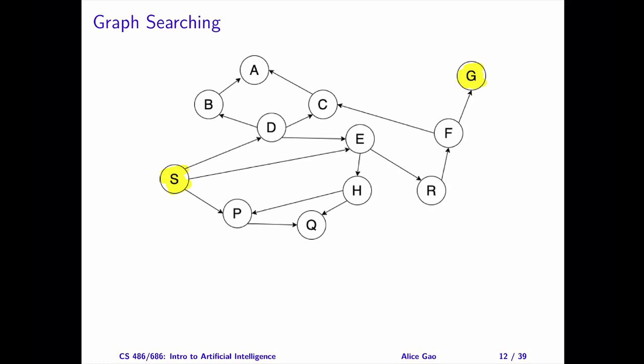The directed edges represent the successor or the neighbor relationships. If there's a directed edge from x to y, then y is a successor or neighbor of x. For example, the initial state S has three successors: D, E, and P. You can also consider the directed edges as actions. For instance, taking an action allows us to move from S to D.